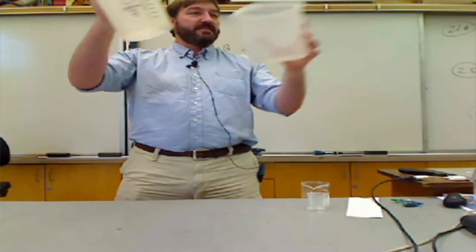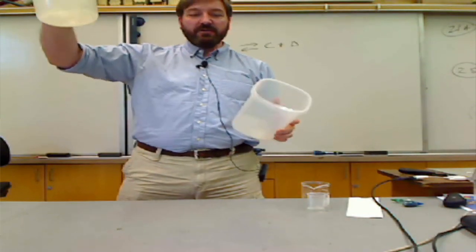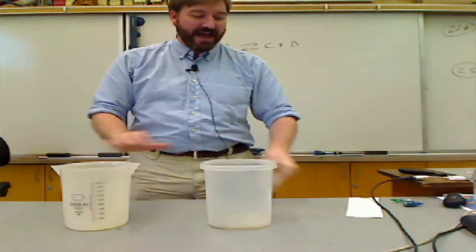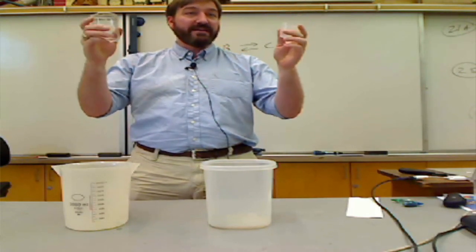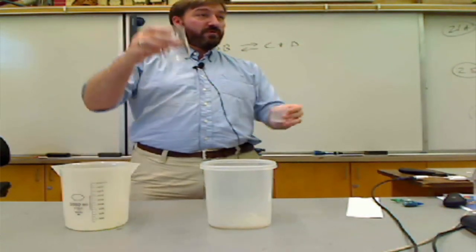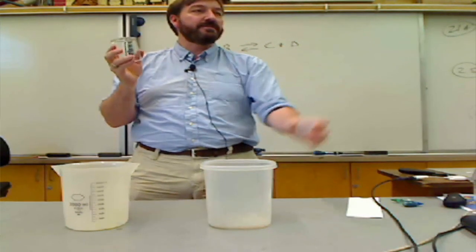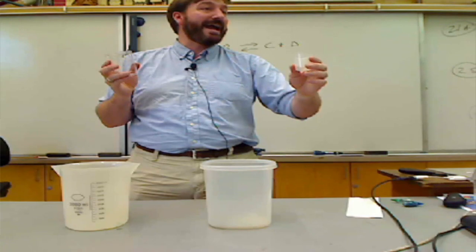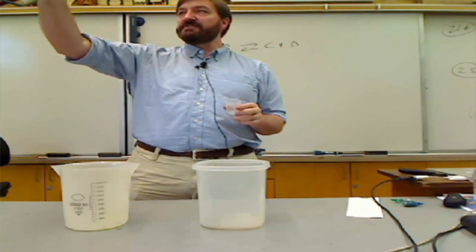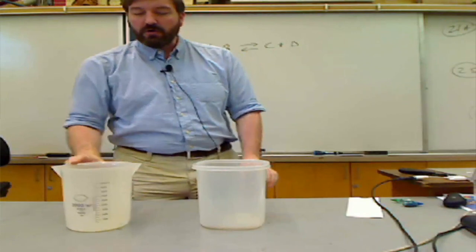Imagine these two buckets together, representing the same volume, the same container. One is going to hold our reactants and one is going to hold our products. The rate of the chemical reactions are represented by the size of the beaker — the bigger the beaker, the bigger the potential forward rate. These beakers represent the rate constants. The reverse reaction has a smaller rate constant because this is an exothermic reaction, so under these conditions it's harder for the reverse reaction to take place.